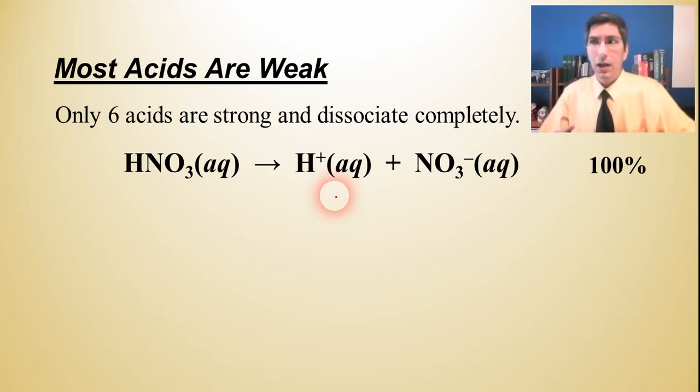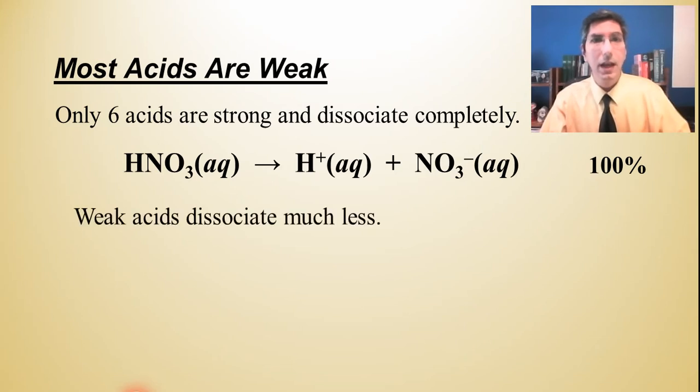And there are only six acids like this. That would be nitric, sulfuric, perchloric, as well as hydrochloric, hydrobromic, and hydroiotic acid. Those are the six strong acids. Every other acid that we're going to work with in AP chemistry is a weak acid. That means it's going to dissociate, break apart much less.